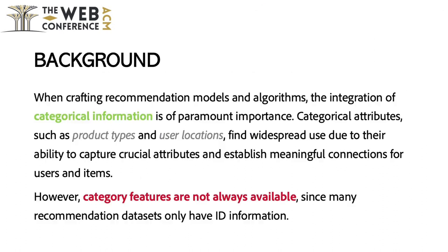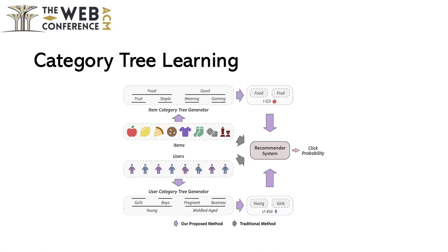When crafting recommendation models and algorithms, the integration of categorical information is of paramount importance. Categorical attributes, such as product types and user locations, find widespread use due to their ability to capture crucial attributes and establish meaningful connections for users and items. However, category features are not always available, since many recommendation datasets only have ID information.